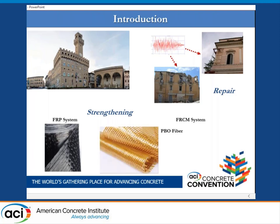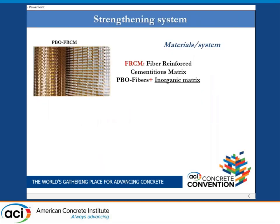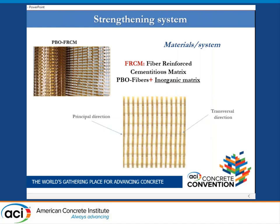Such fibers include PBO fiber or basalt fiber. The FRCM system is made up of PBO fibers and an inorganic matrix. The PBO fiber is composed of yarn in both the principal directions. The fabric used is a semi-balanced and coated fabric mesh.